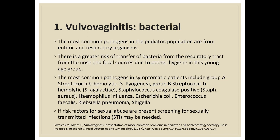Bacterial vulvovaginitis is also seen in this age group. The most common pathogens come from enteric and respiratory organisms, with greater risk of transfer due to poorer hygiene. The most common pathogens in symptomatic patients include Group A beta-hemolytic Streptococcus (Strep pyogenes), Group B beta-hemolytic Streptococcus (Strep agalactiae), Staphylococcus coagulase-positive (Staph aureus), Haemophilus influenzae, Escherichia coli, Enterococcus faecalis, Klebsiella pneumoniae, and Shigella. If risk factors for sexual abuse are present, screening for sexually transmitted infections may also be needed.